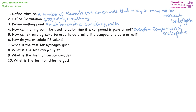How can chromatography be used to determine if a compound is pure or not? Chromatography will separate out everything in a compound, and if it's pure, it should all be in one spot. We calculate RF values by calculating how far a spot has moved.